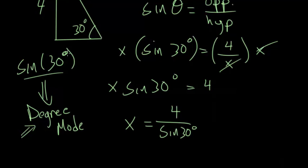And the sine of 30, what you'll find out, is simply equal to 1/2. So when we plug this in we have 4 divided by 1/2, and 4 divided by 1/2 is the same thing as 4 times 2 over 1, which is 8.